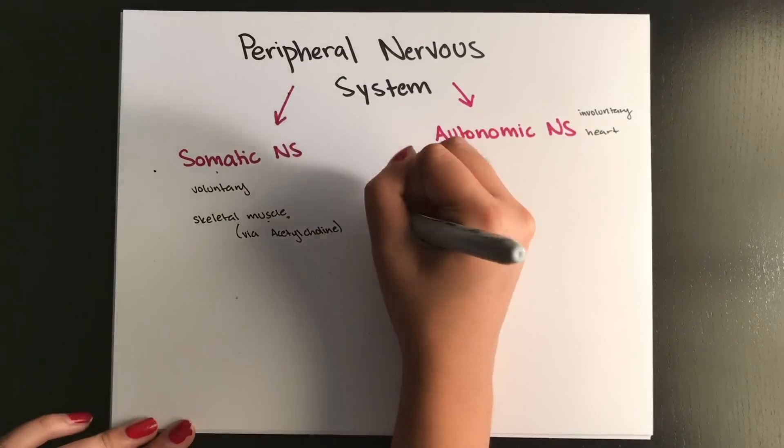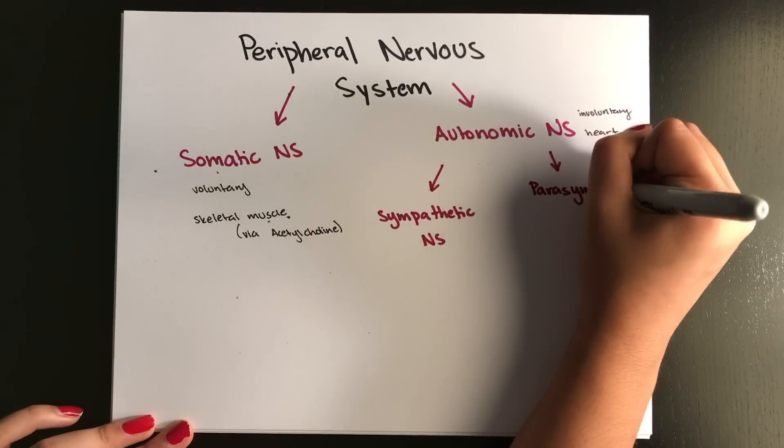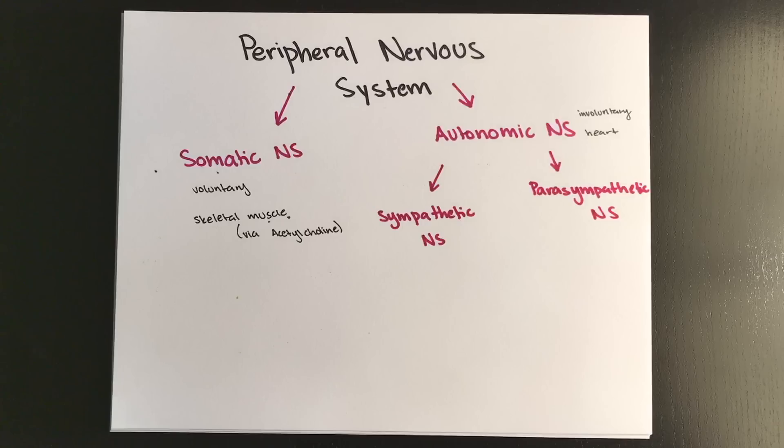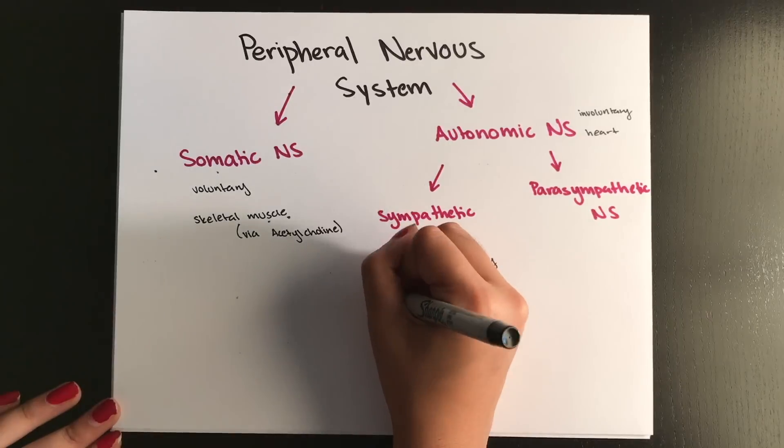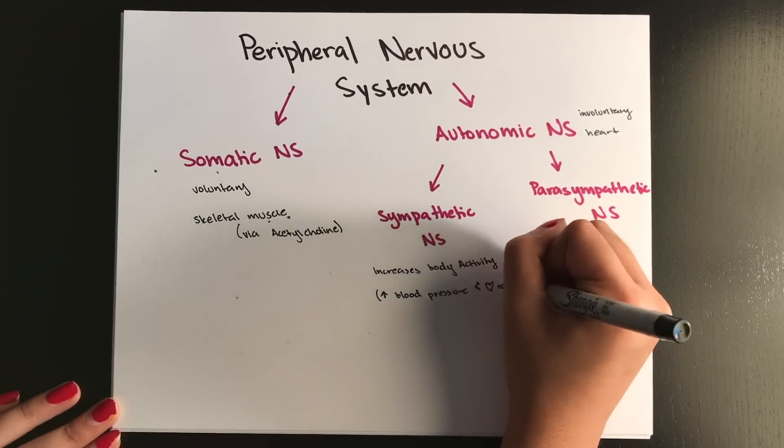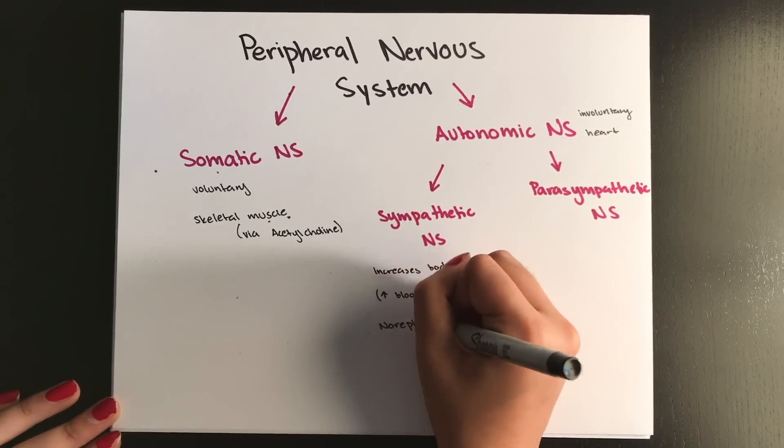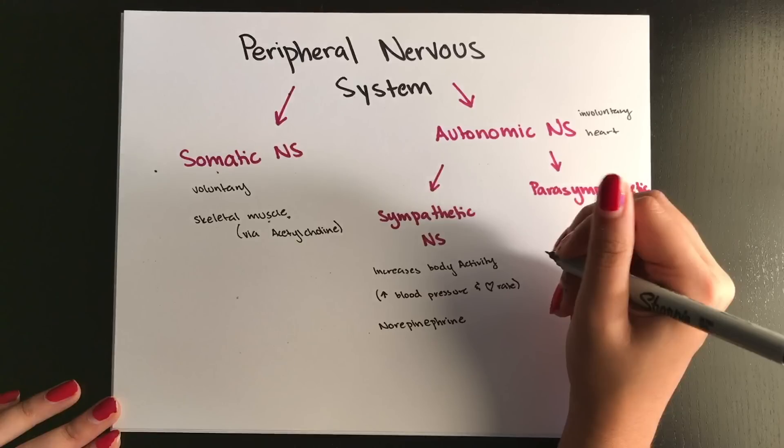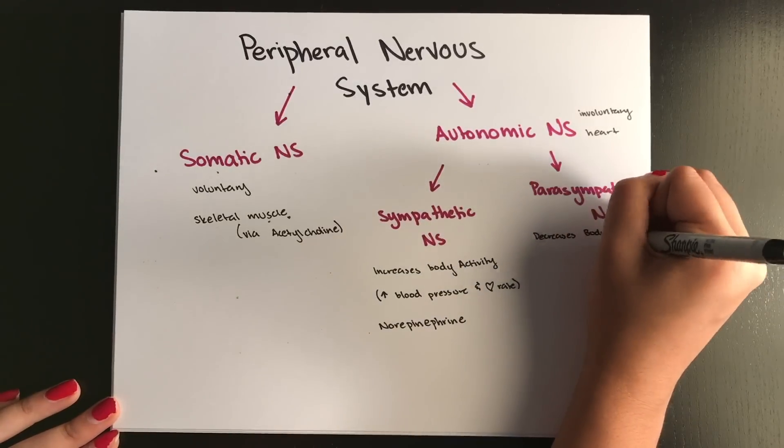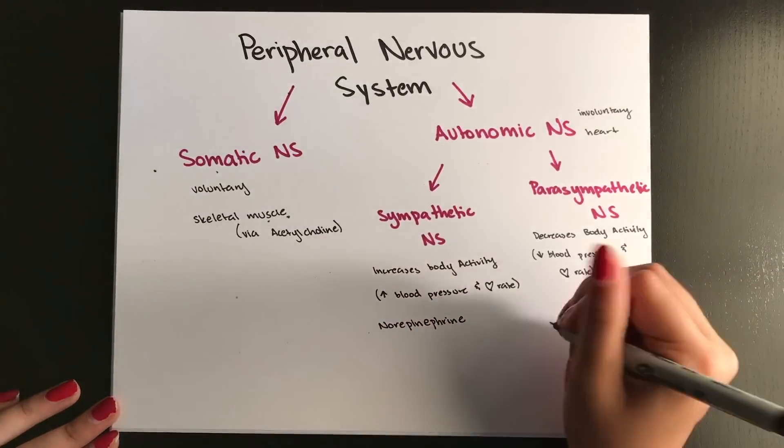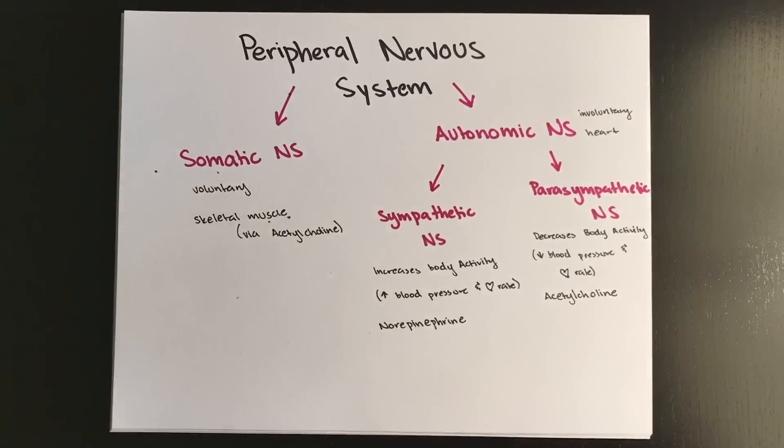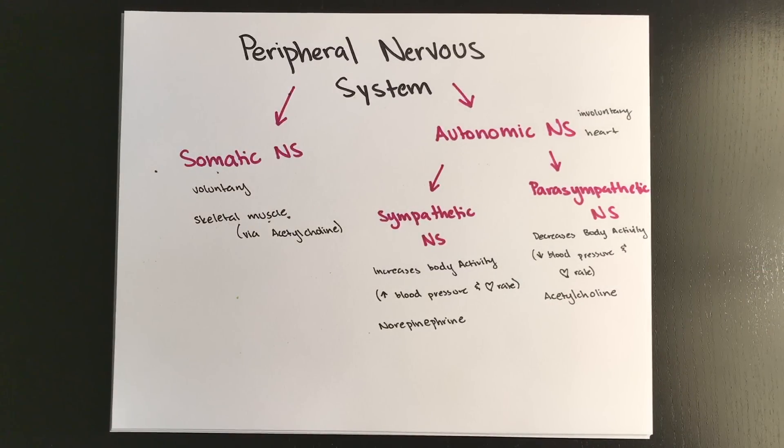The ANS can be divided into the sympathetic division, which increases your body activity, and the parasympathetic division, which decreases your body activity. The sympathetic will help prepare the body for high stress situations. So it'll raise your blood pressure, your heartbeat, breath rate, and the neurotransmitter you want to associate with this is norepinephrine. Now with the parasympathetic division, this is associated with the phrase rest and digest, and it decreases your heartbeat and blood pressure and breath rates. It's basically the opposite. And the primary neurotransmitter you want to associate with this guy is acetylcholine.